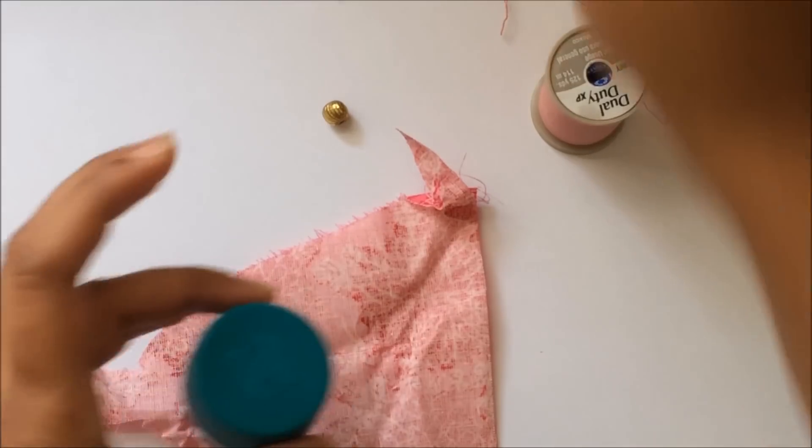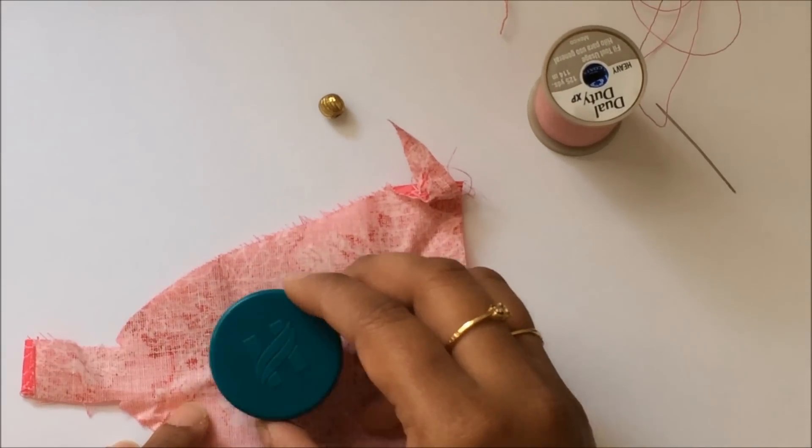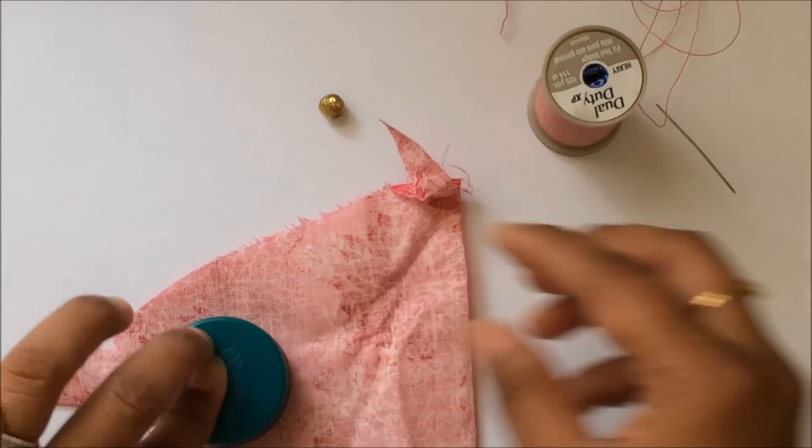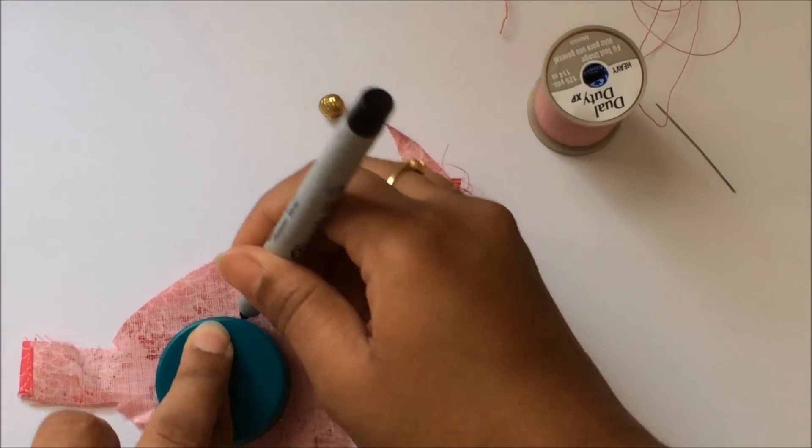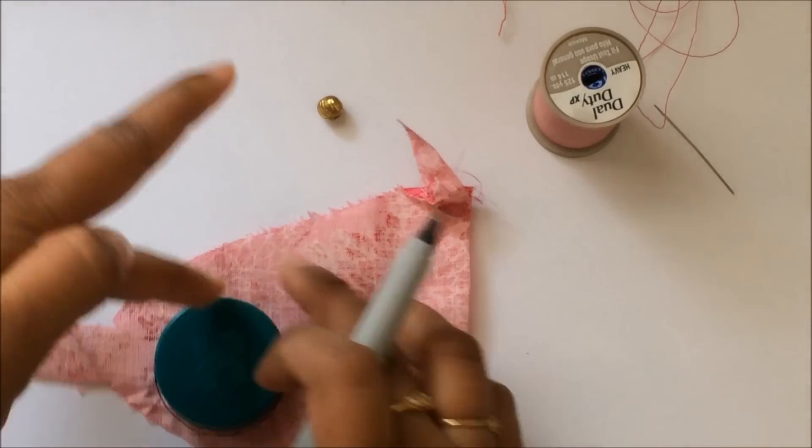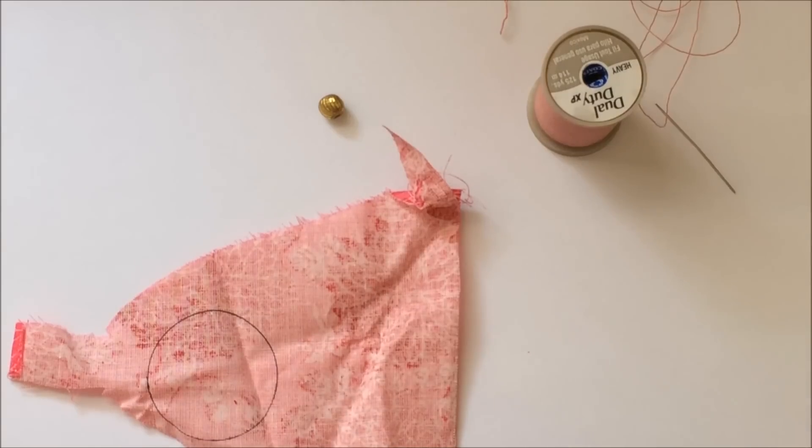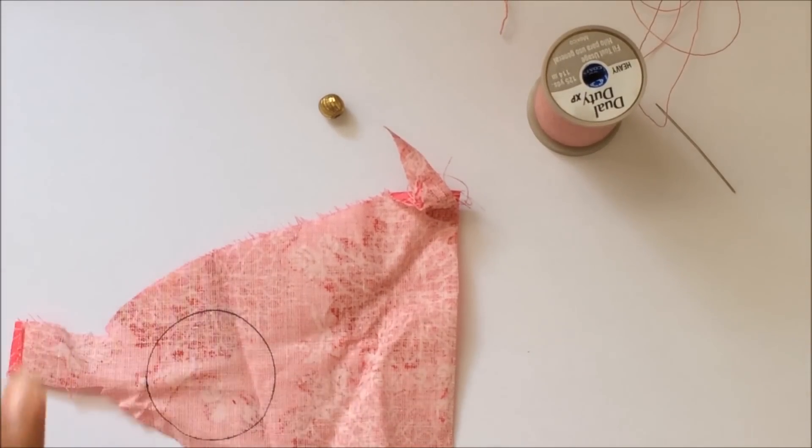I'm just gonna trace this on the fabric using a marker. That's the circle I've got, and now I'm gonna cut this circle out.